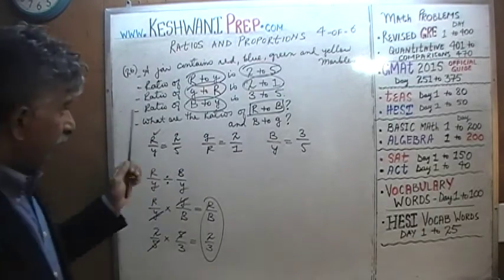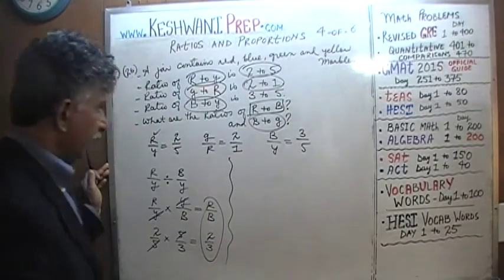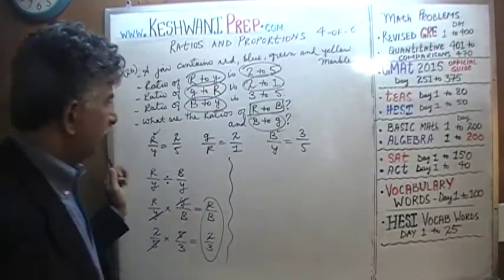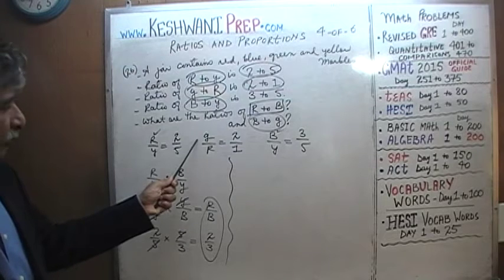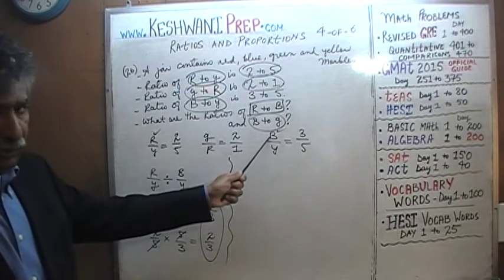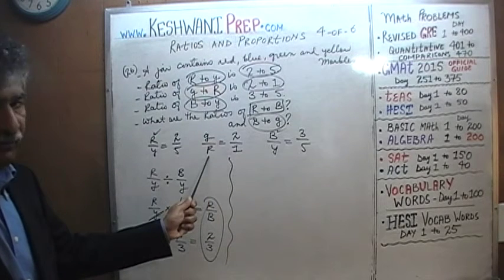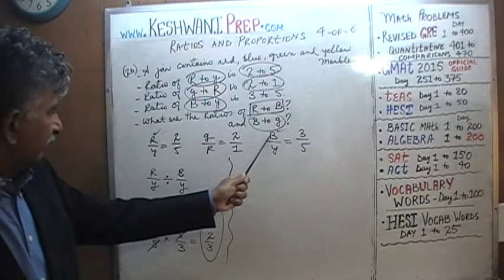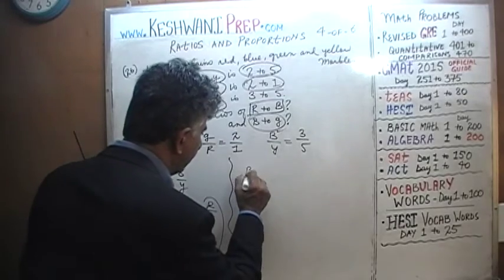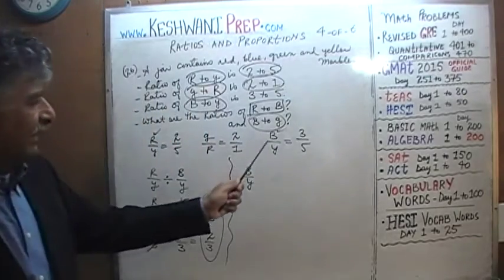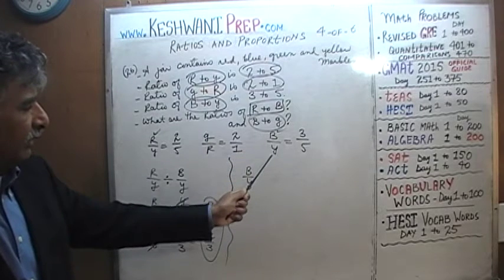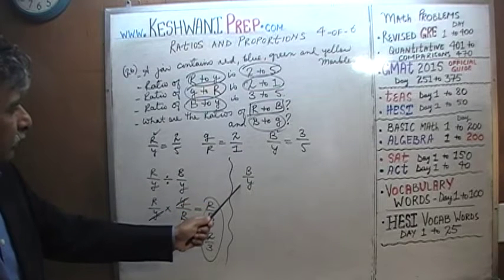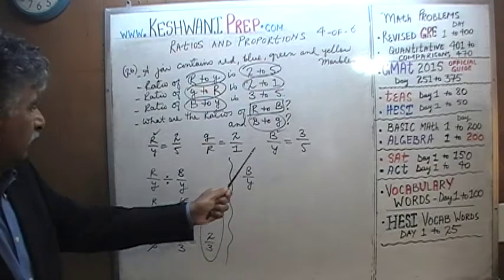Now let's find blue to green. We need something with blue in it — there's blue to yellow. We also need green. There is green in green-to-red, but the second elements are yellow and red respectively — there's no common element to cancel. So we can't directly link blue to green using these two ratios alone.